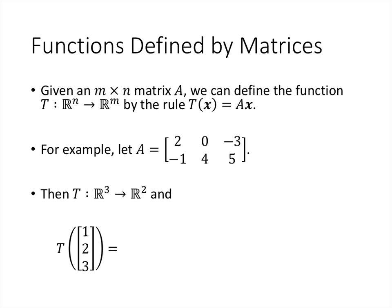One of the different ways that these matrices come up is in the context of functions. The function here is going to go from Rn to Rm, and it's going to be defined by the rule T of x equals A times x. So the idea is the function takes in as its input a vector, and what it does to that vector is multiply it by a matrix. As an example, we pick a specific matrix A, and then T takes the vector you plug in and multiplies it by this matrix A.